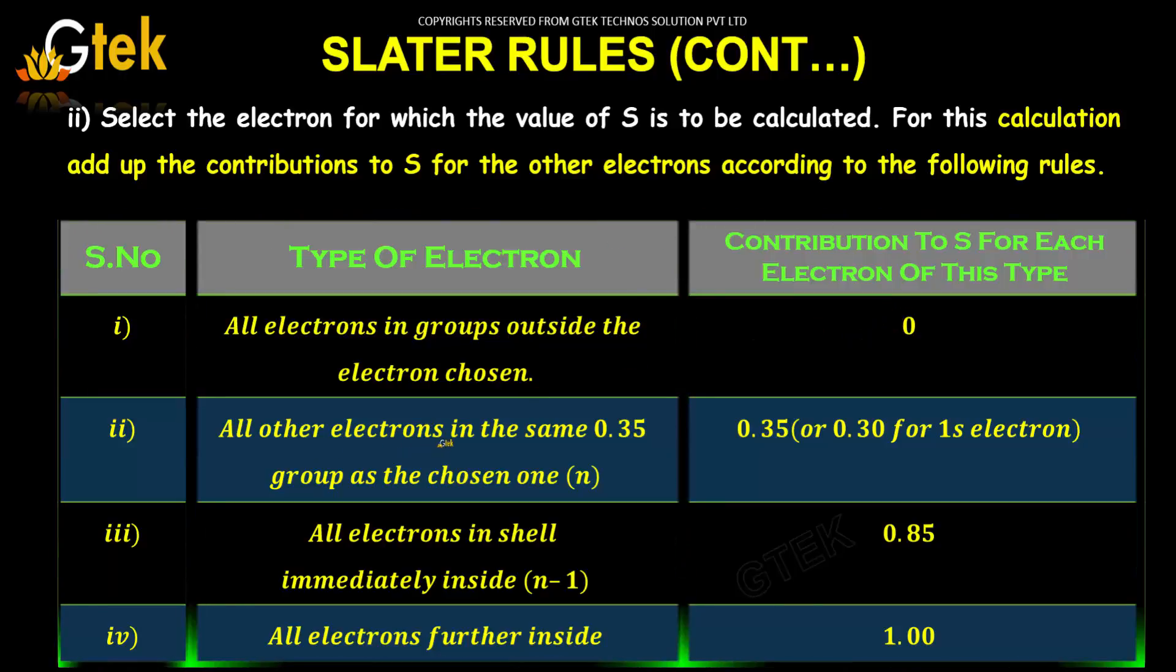All other electrons in the same 0.35 group as the chosen one, n. So, 0.35 or 0.30 for 1s electron.